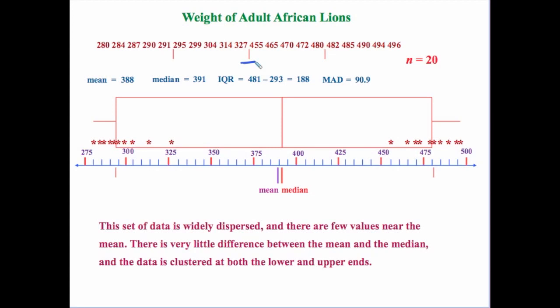In statistics this is often referred to as a bimodal distribution. What could cause this? Well, from science we know that male adult African lions are actually quite a bit bigger than female adult lions. So that would be a very logical explanation — we've actually got probably 10 female lions and 10 male adult lions, and that kind of explains why the data is clustered the way that it is.